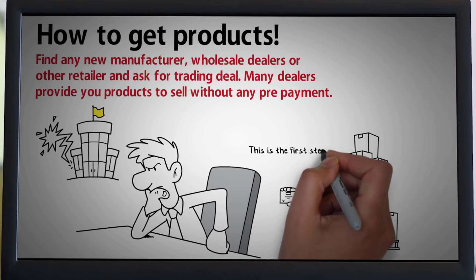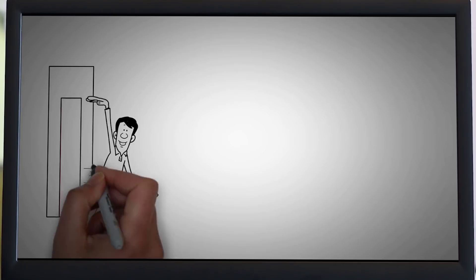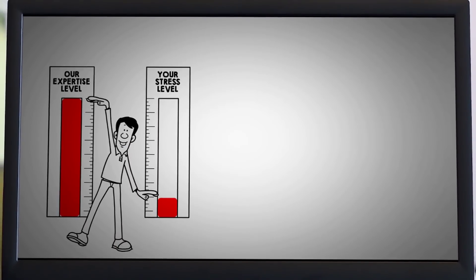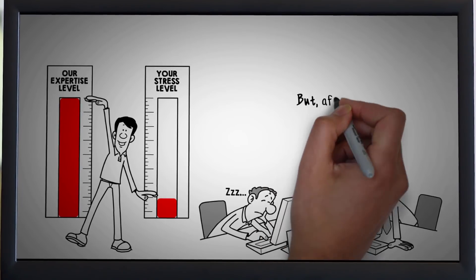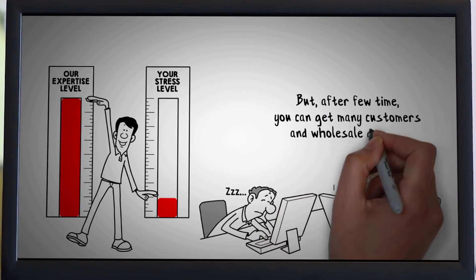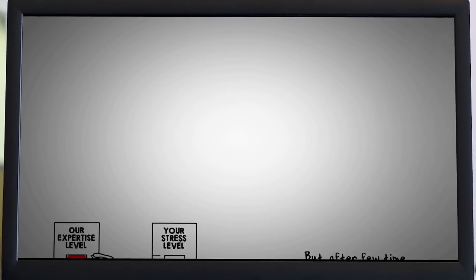This is the first step to get rich in smart way. Once you are getting success, then try to manufacture small products and sell it on your local market. Starting stage, you can find many hurdles. But after few times, you can get many customers and wholesale dealers who love to sell your products.